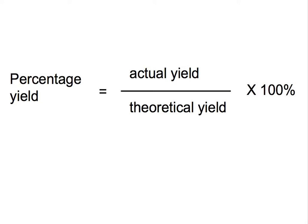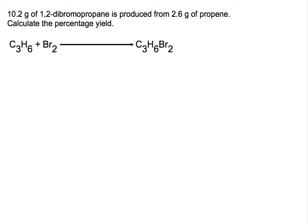Let's go through an example together to see how to calculate this using mass. In this calculation we're getting 10.2 grams of 1,2-dibromopropane produced, so 10.2 grams is our actual yield. We're producing that from 2.6 grams of propene, which we will use to calculate our theoretical yield.